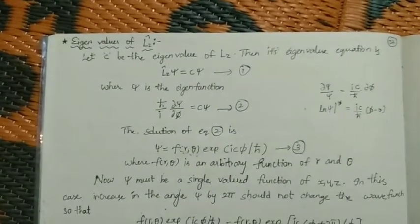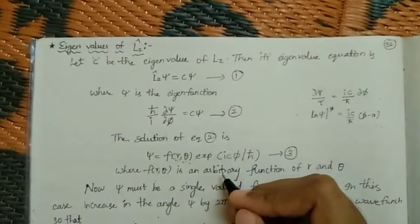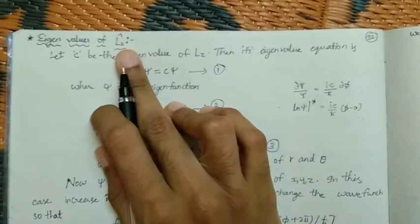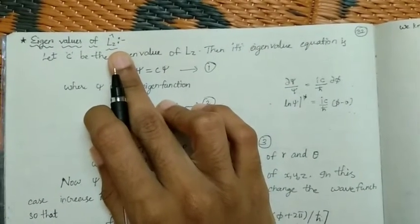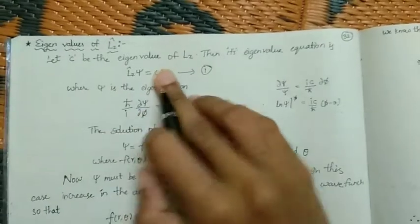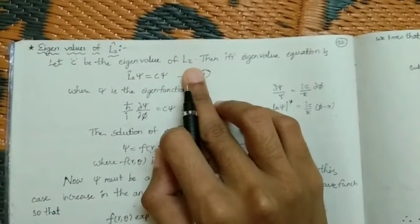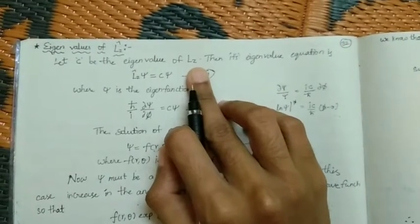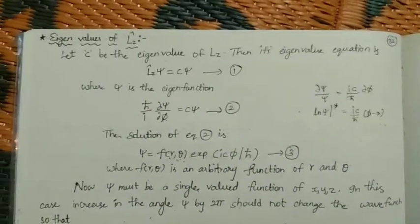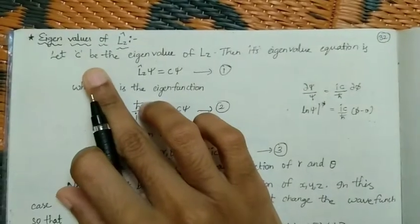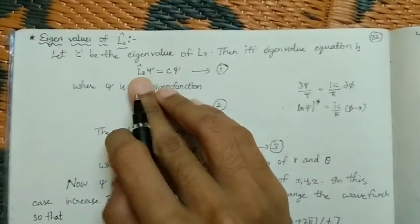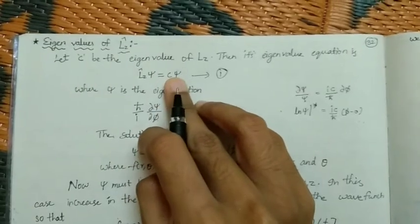Let's find the eigenvalues of Lz, the angular momentum in z-direction operator. Let C be the eigenvalue of Lz. If C is the eigenvalue of Lz, then the eigenvalue equation can be written as Lz-hat acting on xi equals C times xi.